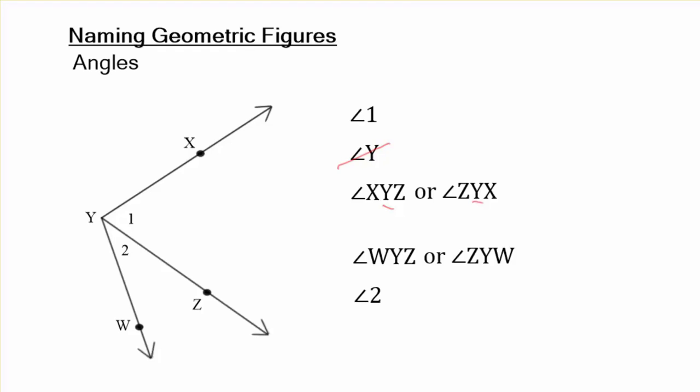So again, three letters is the most common way of naming an angle. Again, the vertex must be in the middle, that Y. And sometimes they will give you a number, but remember those numbers like the one and two are not going to measure the degrees.